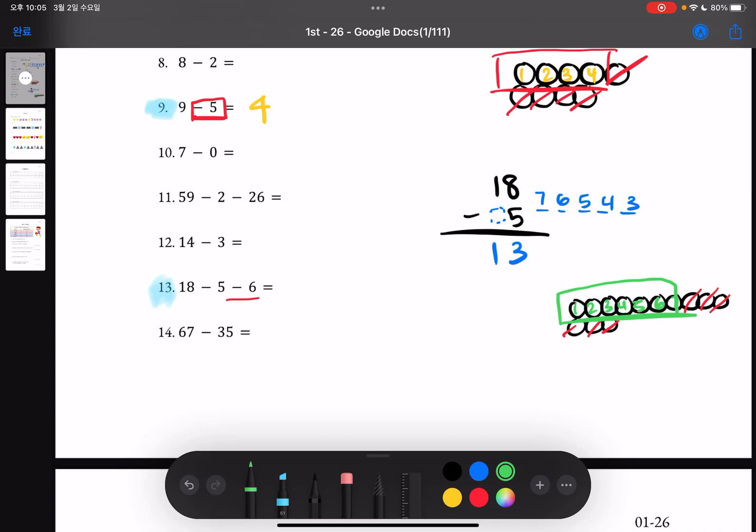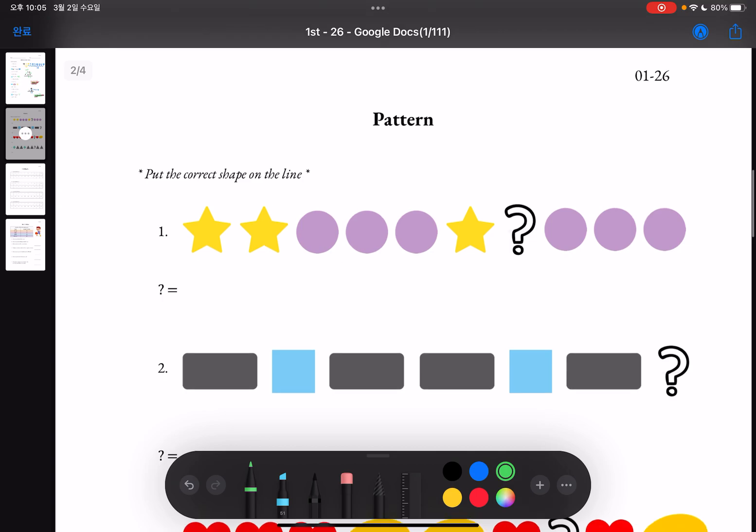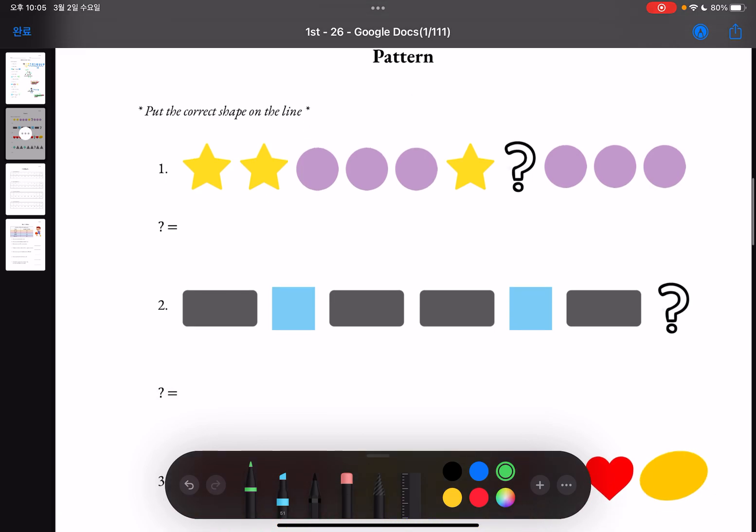Now moving on to the next section, it's about pattern. Looking at the patterns for each number you have to guess what's going to be on the question mark. So when we look at number one we see that there are two stars and then three circles.